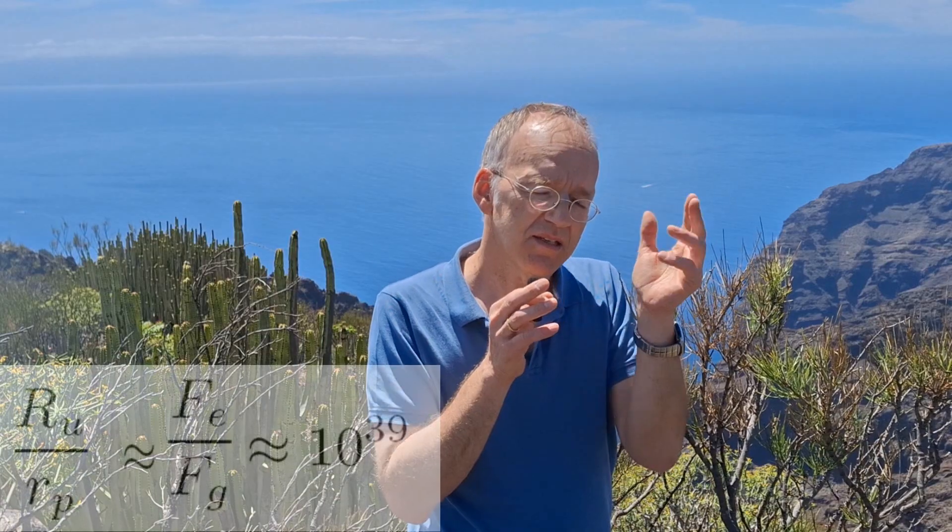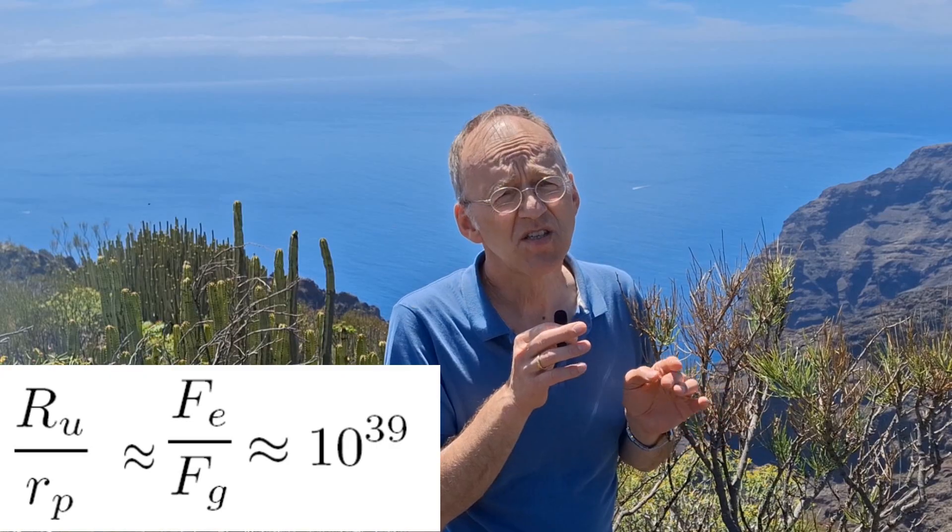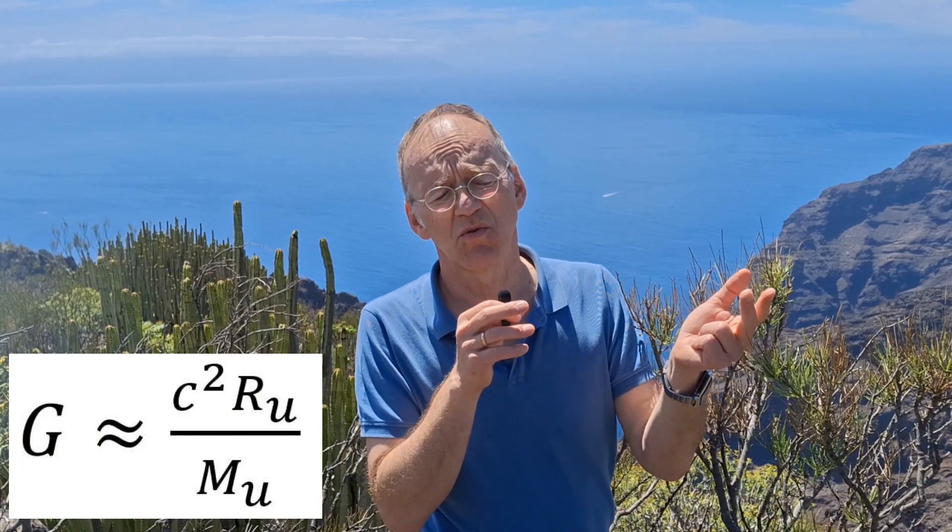I talked a lot about Dirac's large number hypothesis, how that number might be related to the size of the universe, the size of the proton — very interesting. But unfortunately, there is no way in Einstein's approach, in Einstein's unified theory, to get that kind of reasoning into the picture. There's nothing about cosmology, nothing about Mach's principle, in the sense that you relate the strength of gravity to the mass distribution in the universe. And that's so fundamental it cannot be missing in a theory that you want to call unified.